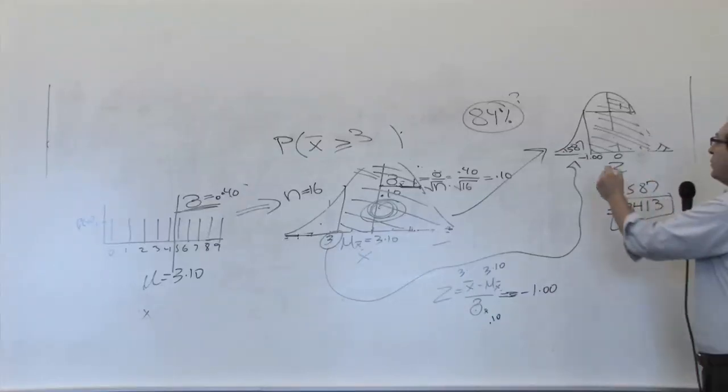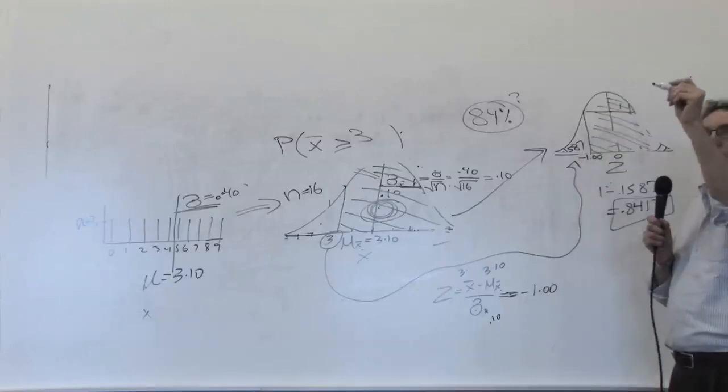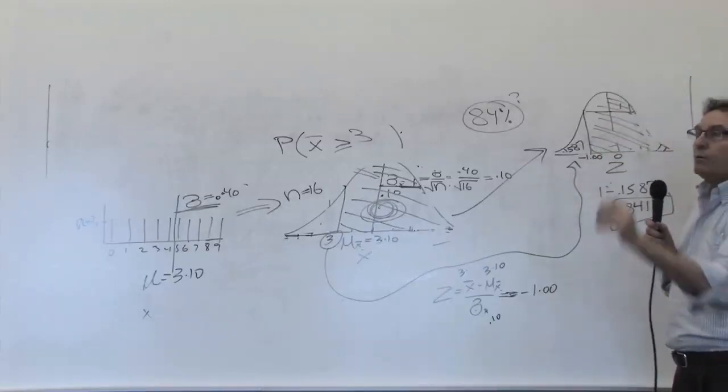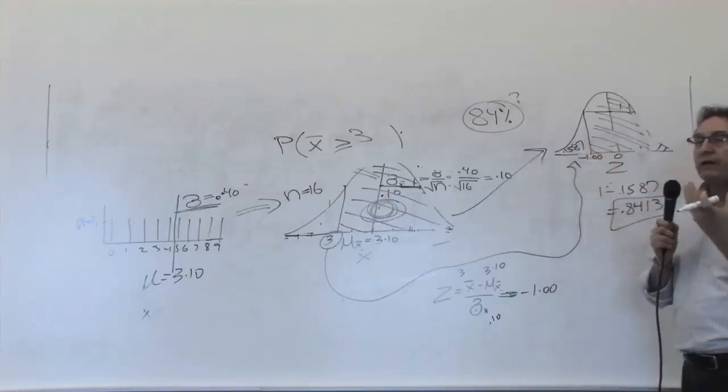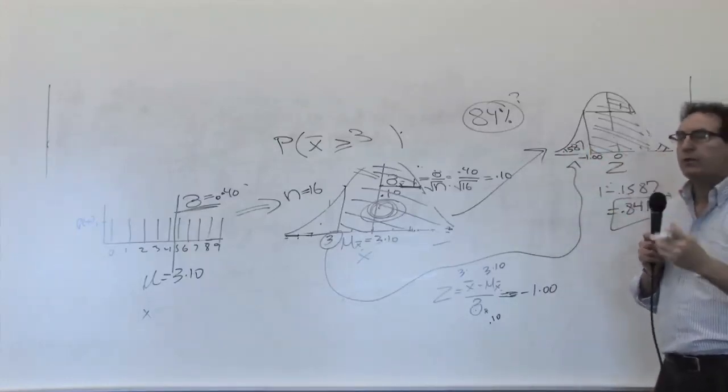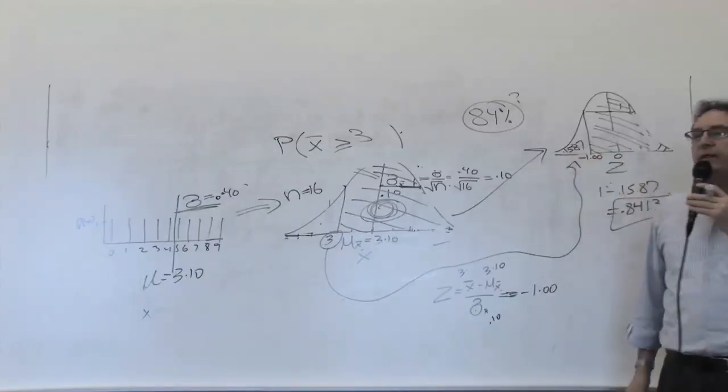Because you're looking at minus 1.0 over to the first column, 1.00. And you should see that. And again, it's very valuable to actually see it physically in class. You should bring the table to class. And it's 0.1587.